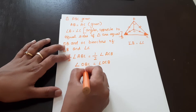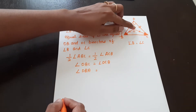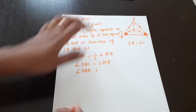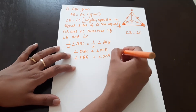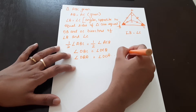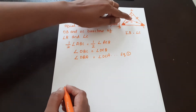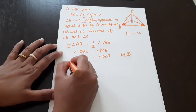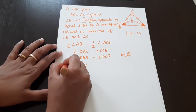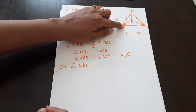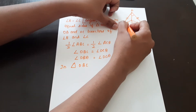Angle OBA is equal to angle OCA. And angle OBC is equal to angle OCB.